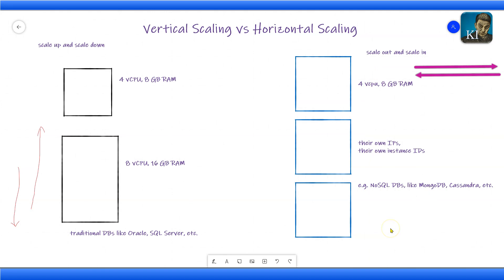You have to understand that in case of horizontal scaling, you will have multiple nodes and every node will have its own IP and instance ID. That's why we typically put a load balancer in front of those instances.